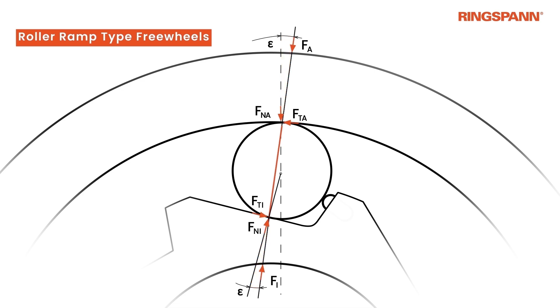In opposition to the Sprague freewheels, the clamping angle formed by the normal forces and the line of influence is equal at both contact points. To achieve self-locking, the tangent of epsilon must be larger than the friction coefficient mu.